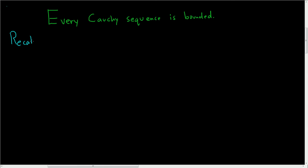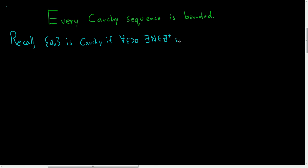Recall, a sequence a_n is said to be Cauchy if for all epsilon greater than 0, we can find a positive integer, say capital N, such that for all little n and little m bigger than capital N, the terms get closer and closer together. In other words, the absolute value of a_n minus a_m is smaller than epsilon.